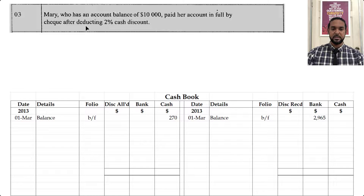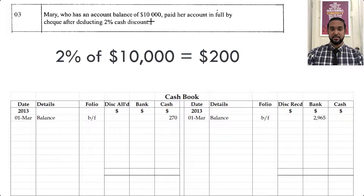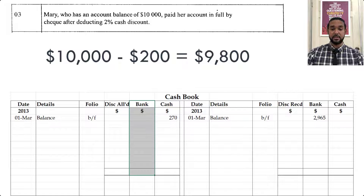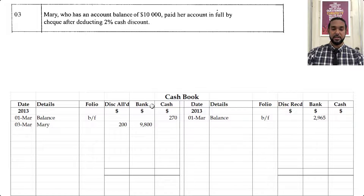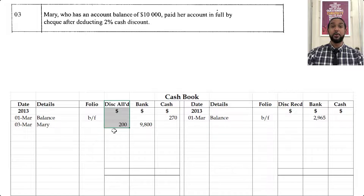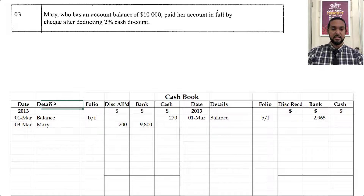She deducted a 2% cash discount, so you find 2% of 10,000 which is 200, then subtract it from 10,000, which leaves 9,800. So you put 9,800 on the bank because that was the amount received by check from Mary. Under discount allowed, you put 200 — that's 2% of 10,000, which was the initial amount pre-discount. In the details you put Mary, and of course put the date.